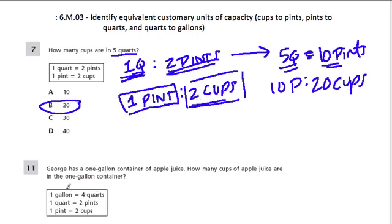This next problem: George has a one-gallon container of apple juice. How many cups of apple juice are in the one-gallon container? One gallon is four quarts, one quart is two pints, and one pint is two cups. Two cups gives us a pint, and two pints gives us a quart. So how many cups give us a quart?